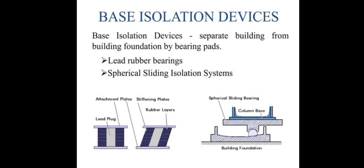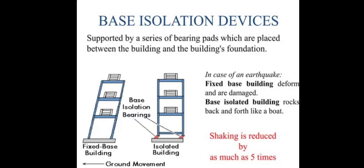Base isolation devices are devices in which buildings are separated from their foundations by bearing pads, including lead rubber bearings and spherical sliding isolation systems. In the figure, lead rubber bearings with attachment plates, stiffening plates, and lead layers are shown. Buildings are supported by a series of bearings placed between the building and its foundation. A fixed base building deforms and gets damaged, while a base isolated building rocks back and forth like a boat, reducing shaking by as much as 5 times, which reduces earthquake losses.